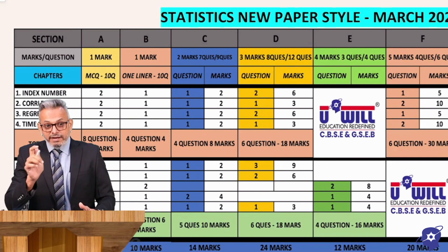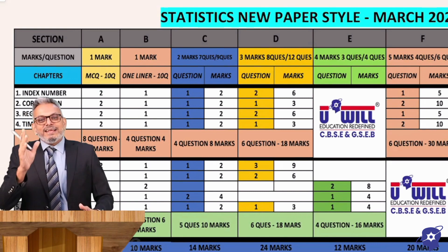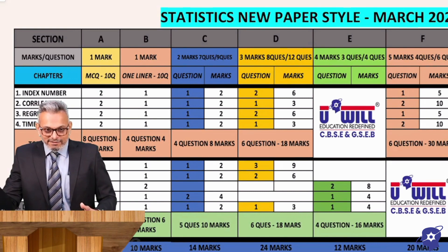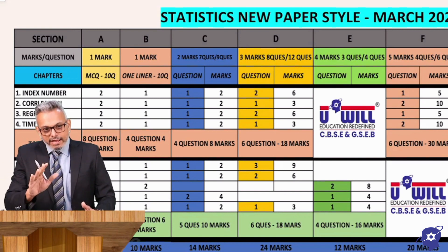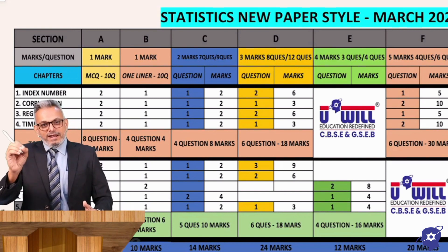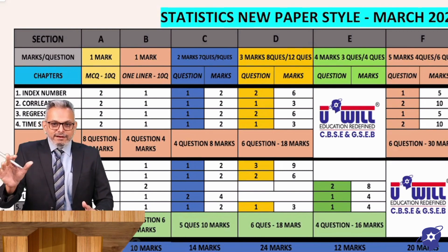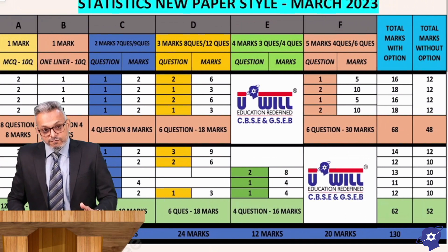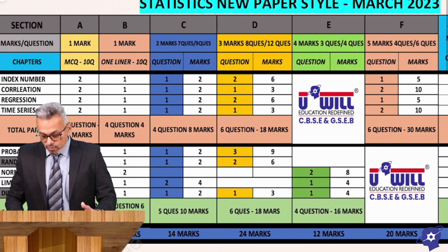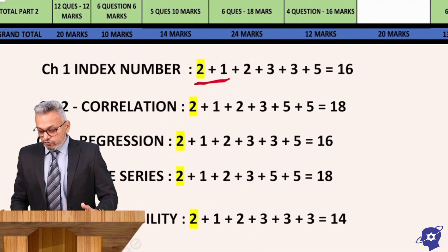I would also like you to underline 2 + 1. 2 is MCQ, 1 is answer in one liner or one sentence. Now, one liner does not mean that if you write one line it's finished. One line means only one line. Just don't go overboard with this one liner thing.